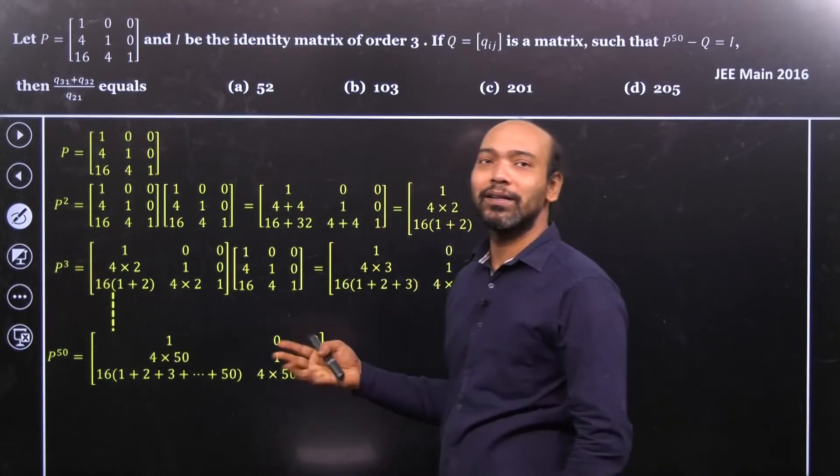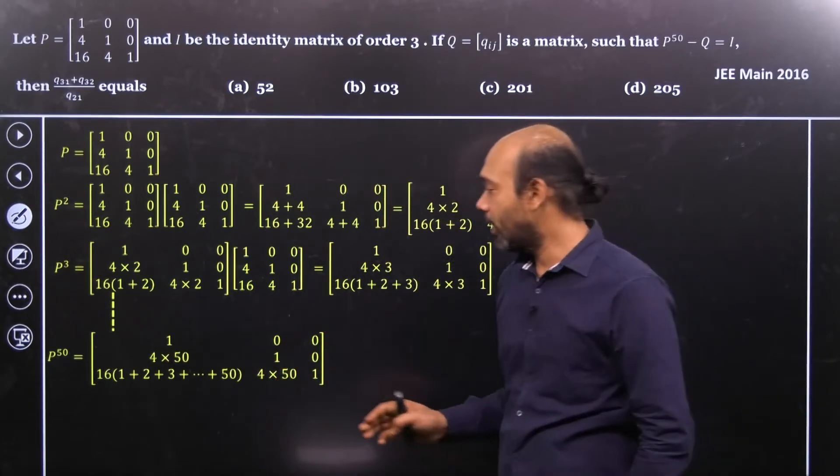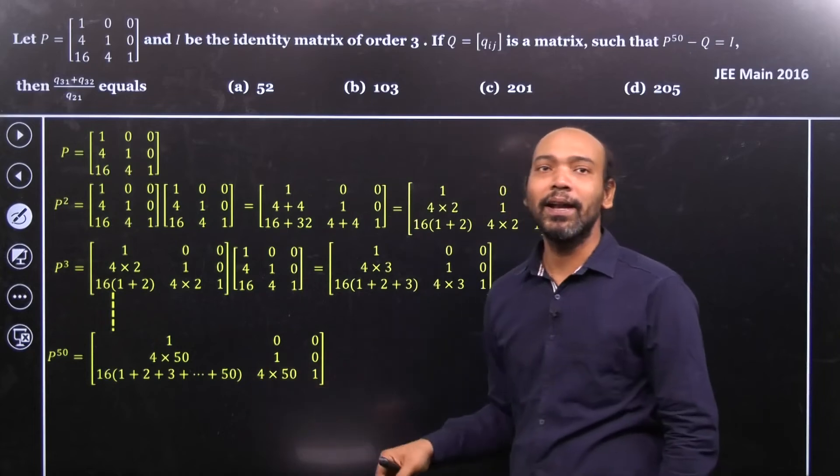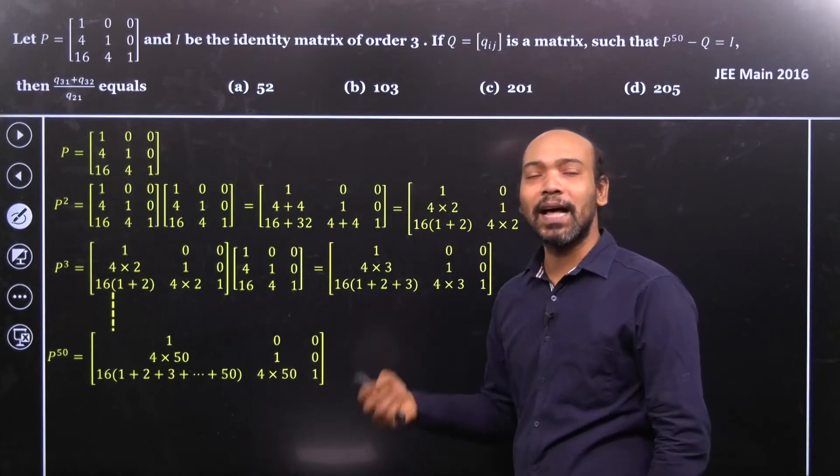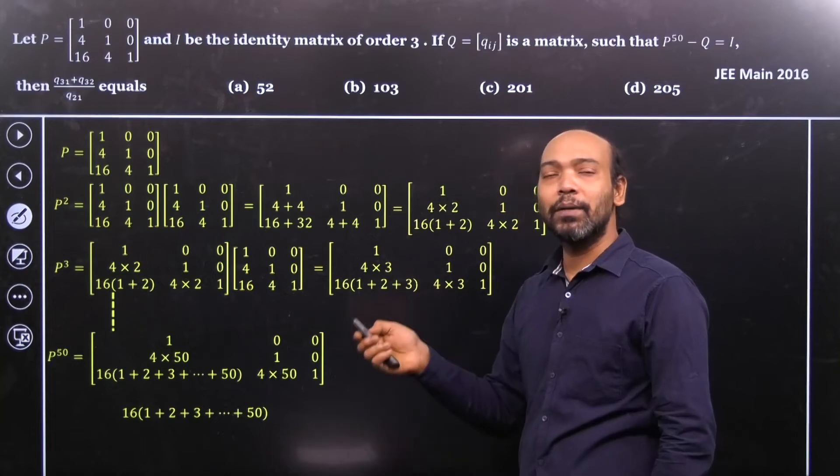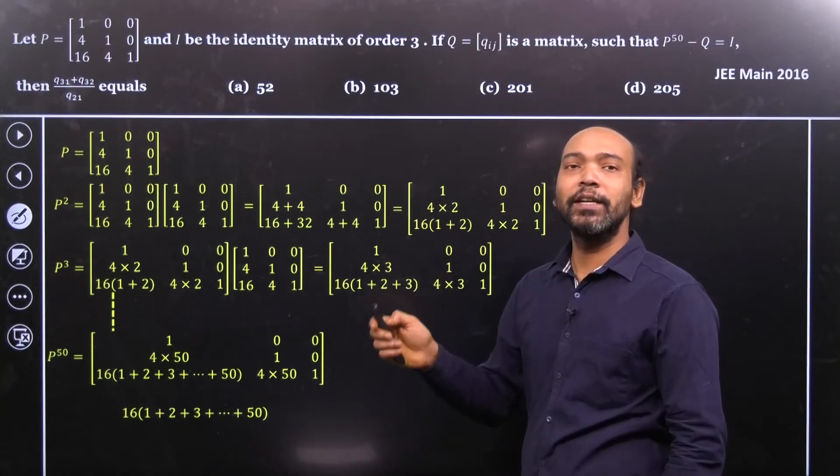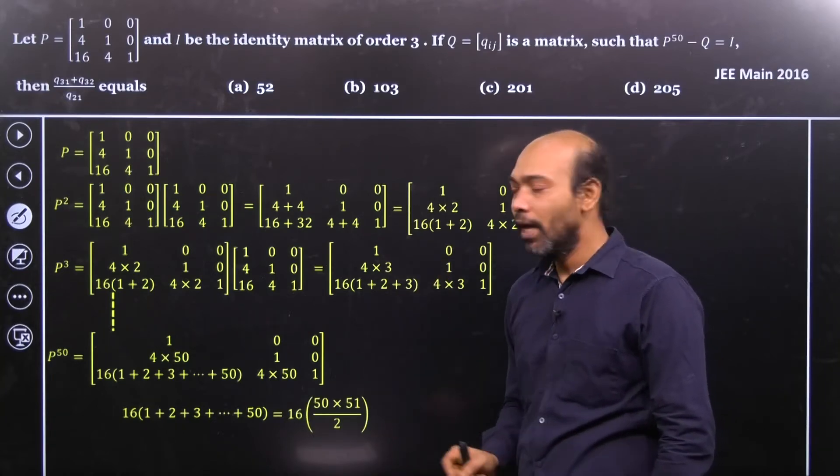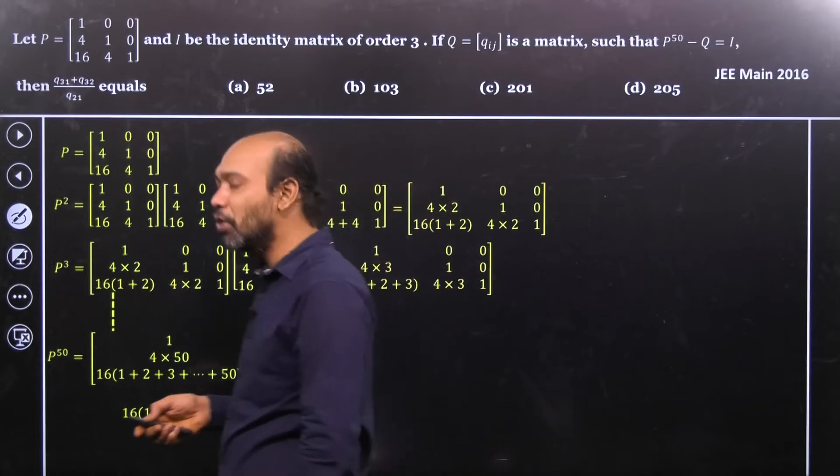Now see that, here this is 200, this is 200. So nothing need to be discussed here. But here, whatever they are in the parenthesis, 1 to 50, it's actually the sum of first 50 natural number. So the sum will be equal to n into n plus 1 divided by 2. That means 50 into 50 plus 1 divided by 2. If I calculate,